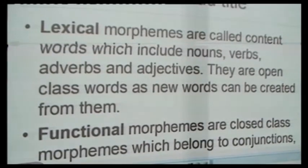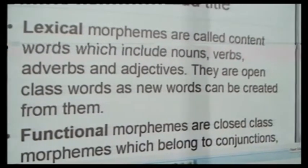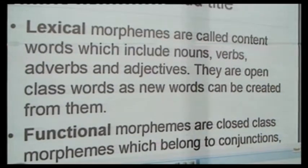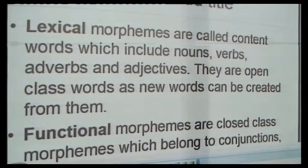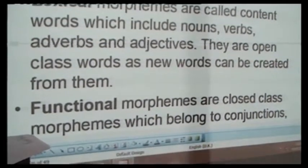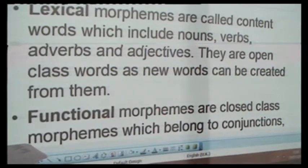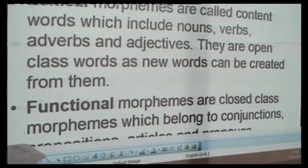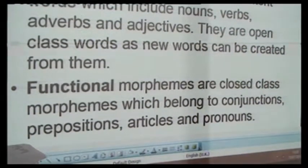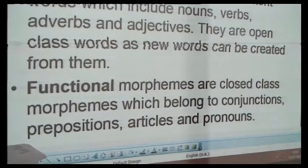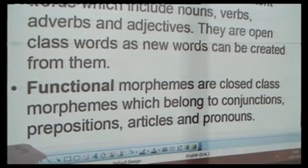So you can have 'boy,' 'far,' 'near,' and so on — these are lexical morphemes. They fall under open class words because you can create new words from them. We also have functional morphemes, which are closed class morphemes because you cannot add new items to them. They fall under items such as conjunctions, prepositions, articles, and pronouns. So you can have the conjunction 'and,' the preposition 'by,' the article 'the,' the pronoun 'she.' These are all functional morphemes.